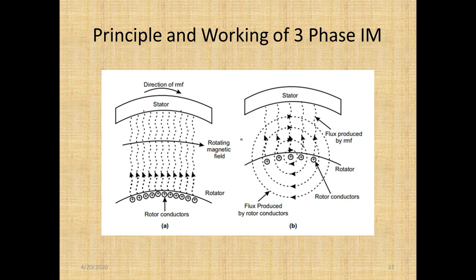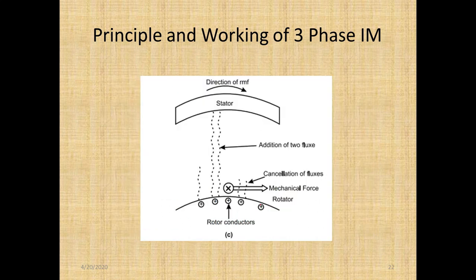This induced EMF circulates the current through the rotor called the rotor current. Therefore there are two fluxes produced: one, the flux produced by the stator winding called rotating magnetic field flux, and the flux produced by current carrying rotor conductor called the rotor flux.